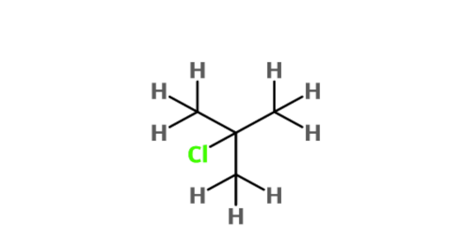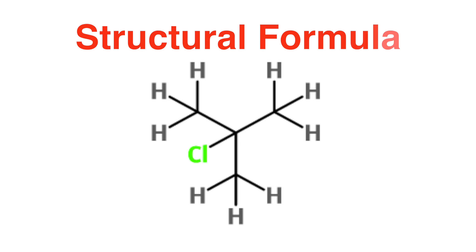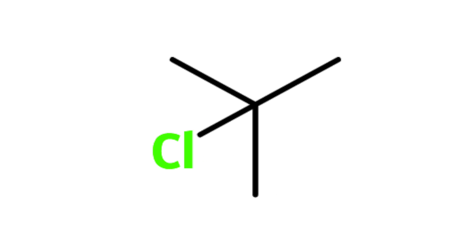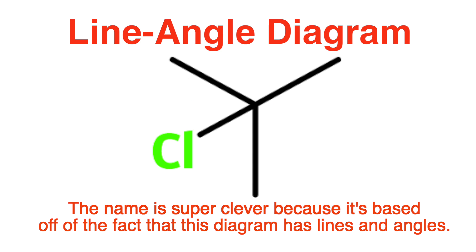The diagram on the screen is called a structural formula, and it's a convenient way to draw organic molecules like this tert-butyl chloride. The areas that I've circled are where the carbon atoms are. Because carbon is present in all organic molecules, the carbon atoms aren't shown in these diagrams for sake of simplicity.